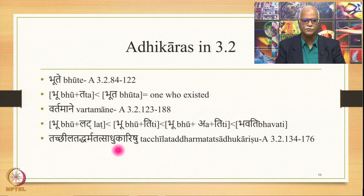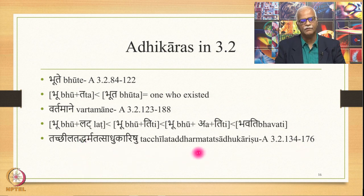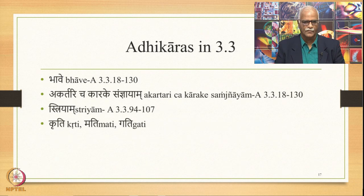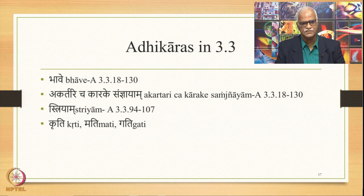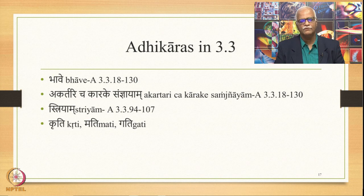There is one more Adhikara: Tatchila, Tath Dharma, Tath Sadhu Karishu from 3.2.134 to 3.2.176 — additional shades of meanings. Then in 3.3 there are three Adhikaras: Bhave from 3.3.18 to 3.3.130; Akar Tari Chakara Ke Saugnyayam in the same range; and Striyam from 3.3.94 to 3.3.107. For example, the verbal root Kru with suffix Ti meaning Bhava and also Stri gives Kruti — a feminine form meaning 'the action of doing'. Mathi means 'the action of thinking', Gati means 'the action of going'. All such words are derived in this Adhikara.